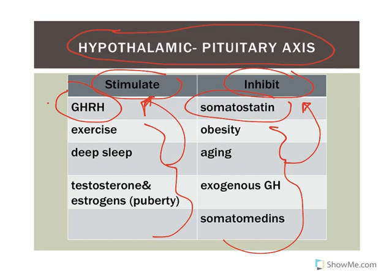On the inhibitory side, obesity inhibits growth hormone release — think of it as the body thinking you're already big enough, even if it's not the right kind of big. Being overweight makes it harder to put on muscle mass. As we age, growth hormone secretion inevitably decreases, though how much depends on the individual — which is why it's important to keep exercising and getting proper sleep as we get older. High somatomedin levels provide negative feedback inhibition, signaling we don't need more growth hormone.